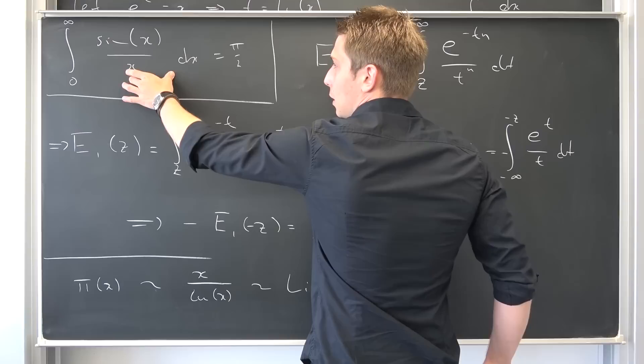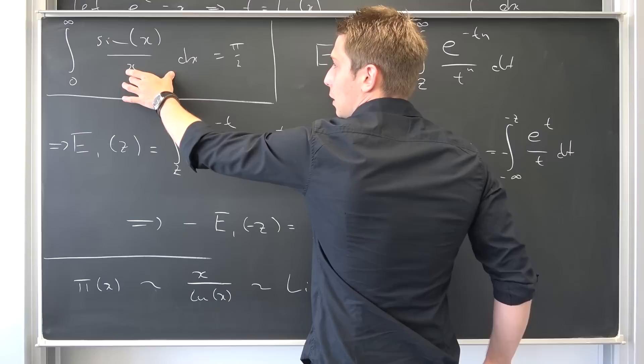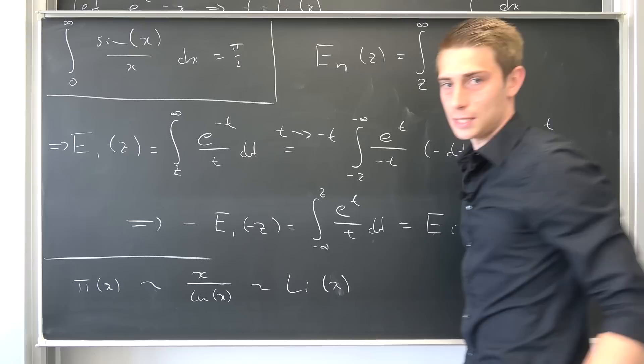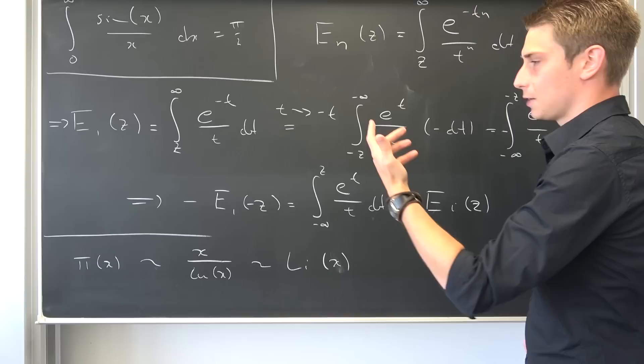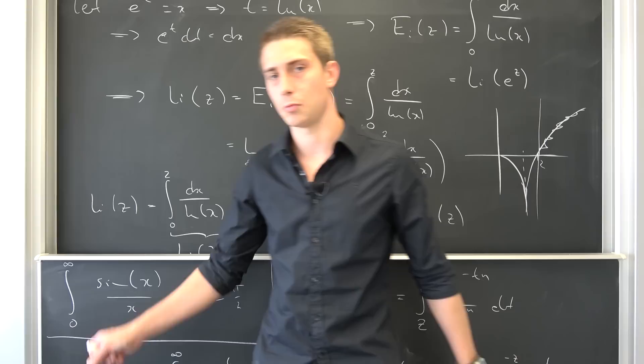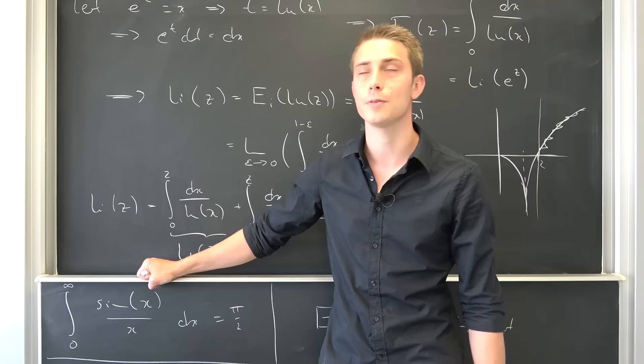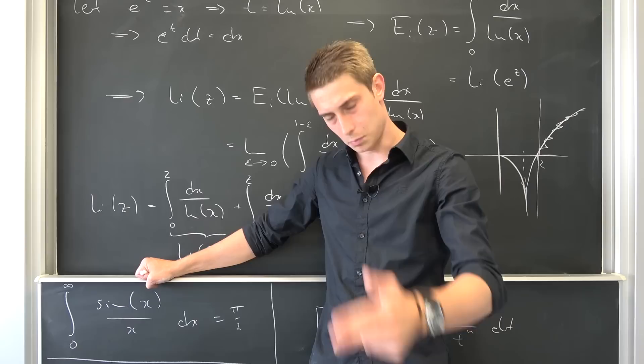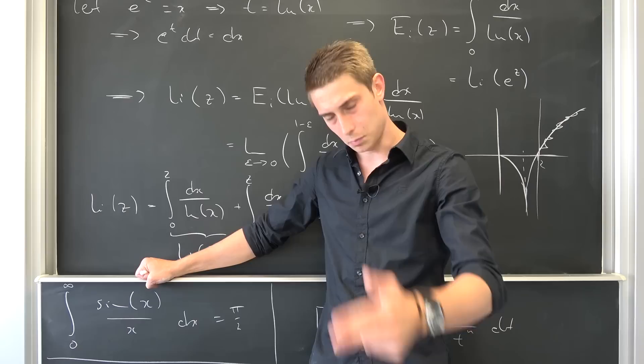We are going to talk about this way more — we are going to talk about the integral representations of the exponential integral, for example in the cosine integral, tangent integral, and so on. Also a series representation for this function. It's going to be quite exciting and it's going to include the Euler-Mascheroni constant yet again. Until then, thanks for watching. If you enjoyed this video, please like and subscribe and recommend the channel. See ya, love you guys, appreciate ya. Ciao.